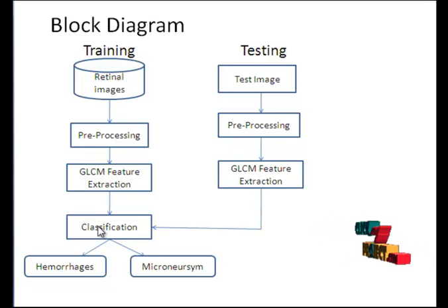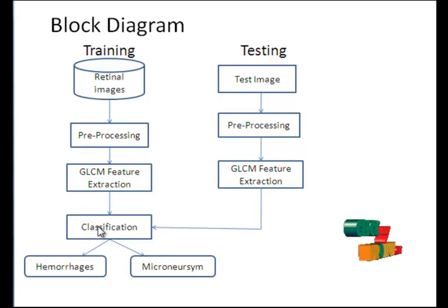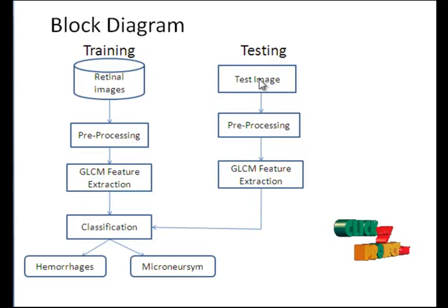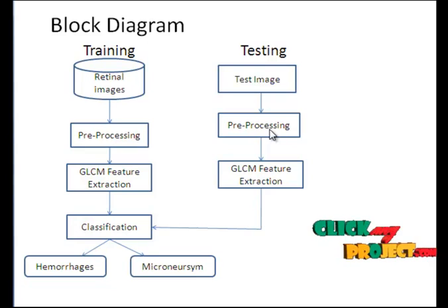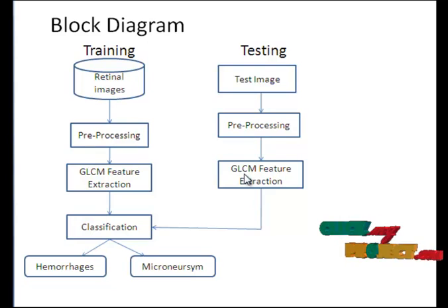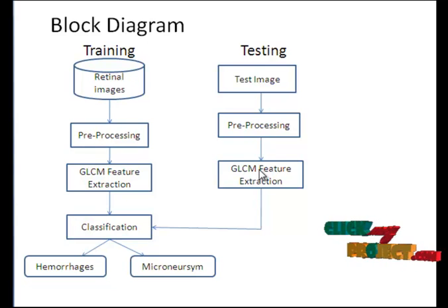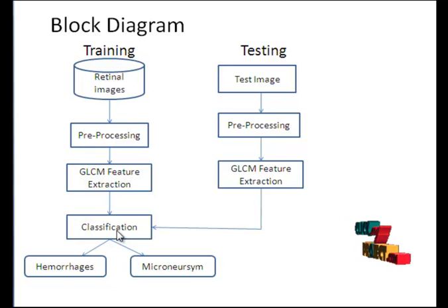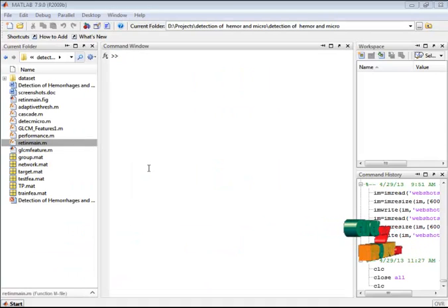In classification, a cascade neural network — a supervised classifier — is used to predict whether the features correspond to hemorrhages or microaneurysms. In the testing stage, a testing image is provided and passed to pre-processing, where the color channels are separated. The green channel is passed to GLCM feature extraction, the feature values are extracted, and the trained classifier predicts the final result as hemorrhages or microaneurysms.